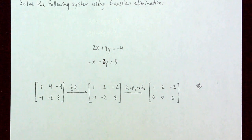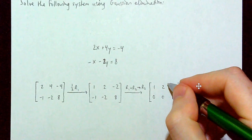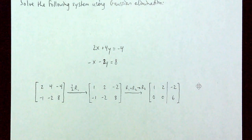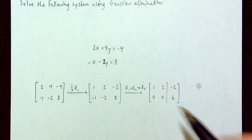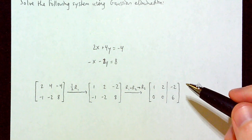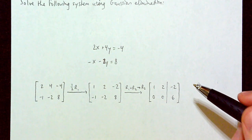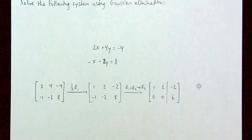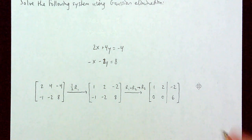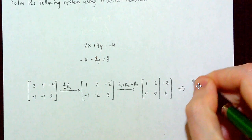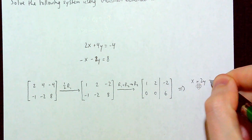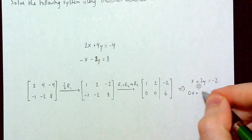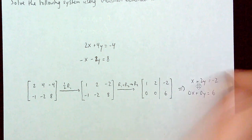Keep in mind this is an augmented matrix — we draw a vertical line to show that the rightmost column contains the values our expressions with X's and Y's are equal to. If I translate this back into a system, the first row tells me X plus 2Y equals negative 2, and the second row says 0X plus 0Y equals positive 6.